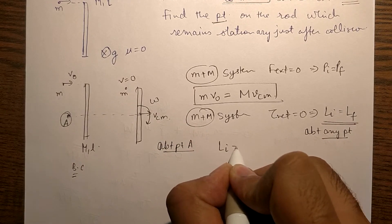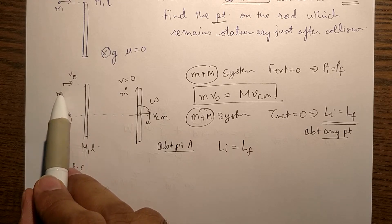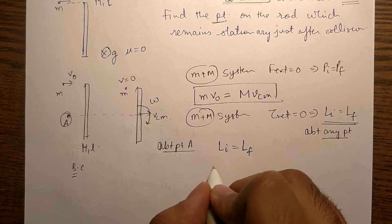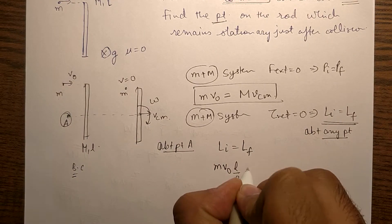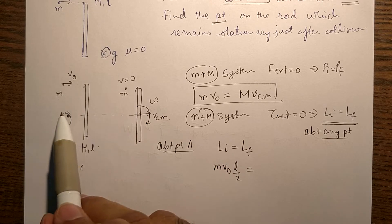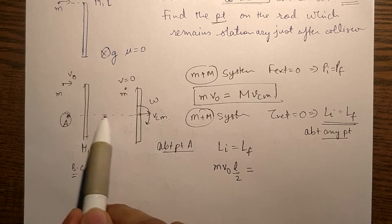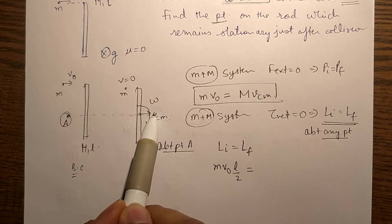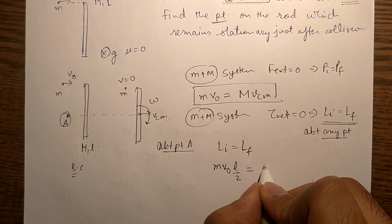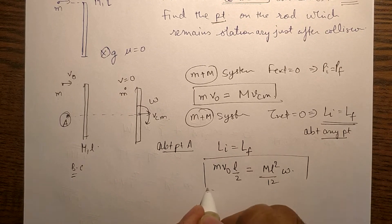Conserving angular momentum about point A: initial equals final. Initially the rod is at rest, so it contributes no angular momentum. The angular momentum of small m is m × V₀ × (L/2). Finally, small m comes to rest — no contribution. For the rod, the translation term gives zero angular momentum about point A. Due to rotation, the angular momentum is Icm × ω = (ML²/12) × ω. This is our second equation.